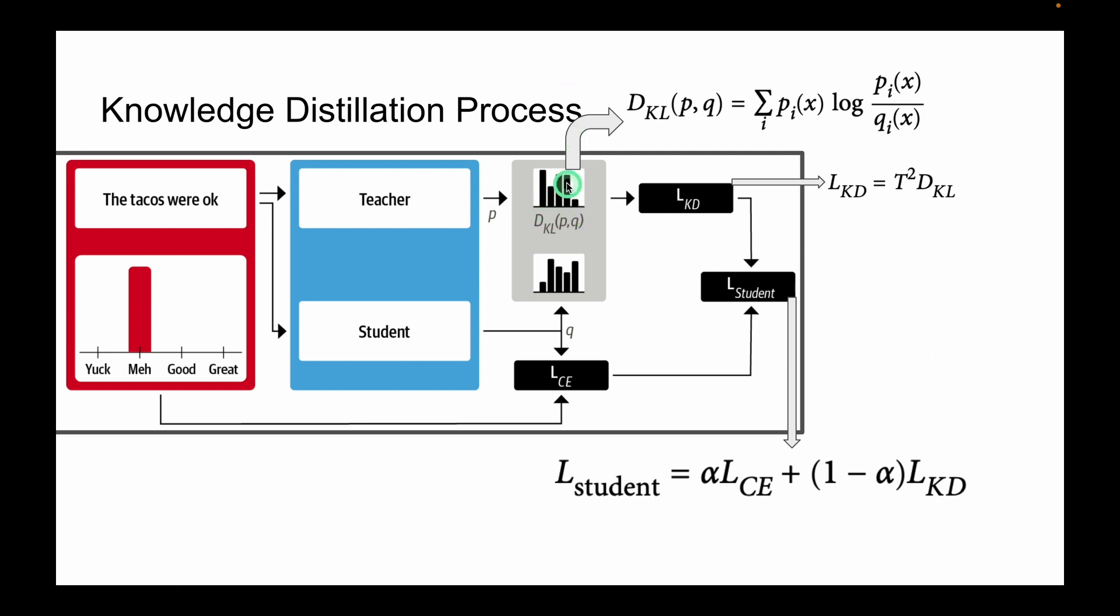To sum it up, we have this softened probability distribution of teacher and student. In order to get the difference between these two probabilities we have this KL divergence function. Then we have Knowledge Distillation loss, and finally we have the loss of student which is a cross entropy because here we are solving an intent classification problem, which is a text classification problem.